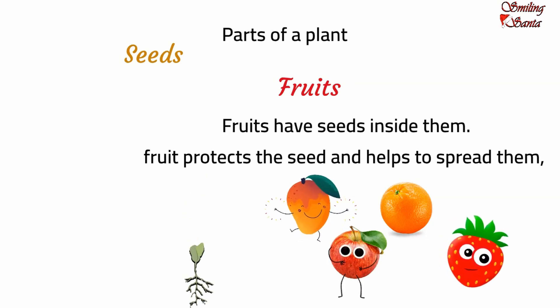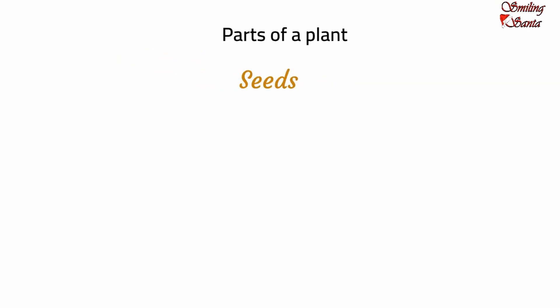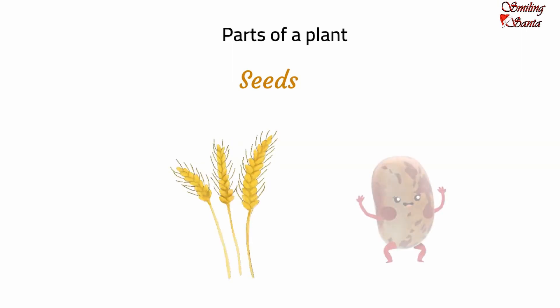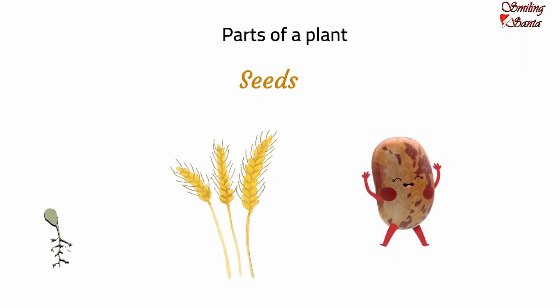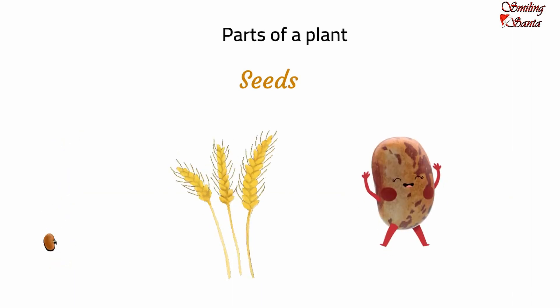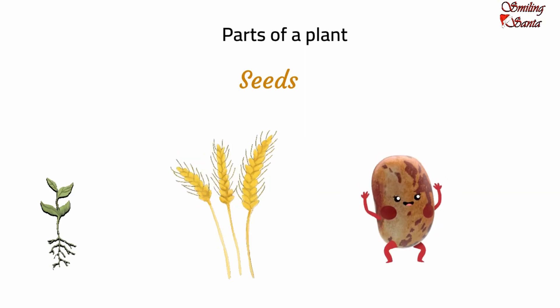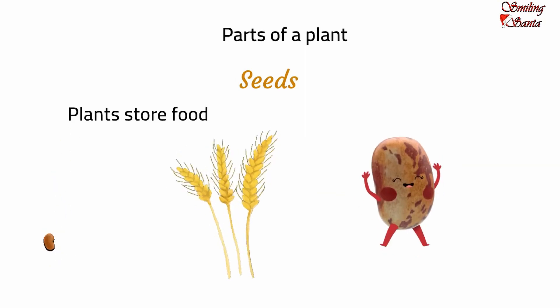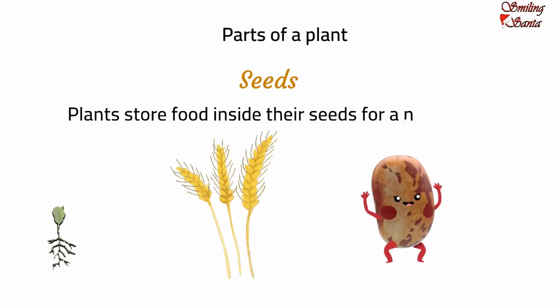Seeds are of different shapes and sizes. We eat some seeds, such as rice, wheat, beans, etc. Each seed has a baby plant inside it and can develop into a fully grown plant. Plants store food inside their seeds for a new plant.